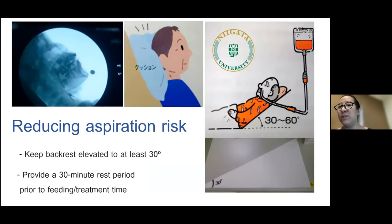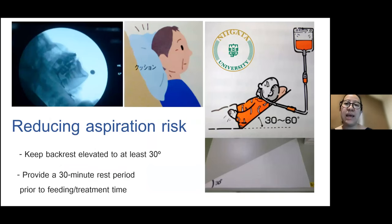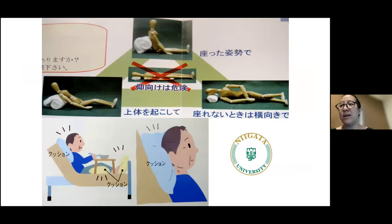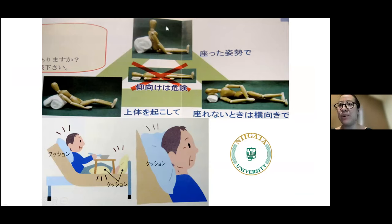To reduce the risk of aspiration, recline the chair 30 to 60 degrees. Always have cervical neck support. Provide enough time for the patient to rest and make sure the patient is well awake — otherwise there is a risk of aspiration. Supine position is not recommended; the patient must have back support and head support.